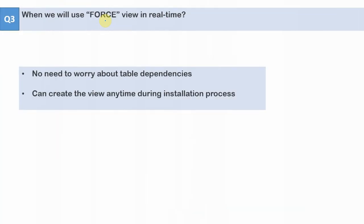The next question is: what are the real-time scenarios where we use a force view? The key advantage of a force view is that we can create the view even if the base tables are not present. This means you don't have to worry about table dependencies. Instead of creating all tables first and then creating views, you can create all your views using the FORCE option, then create the tables later, and at the end of your installation recompile all invalid objects. This is especially helpful when the installation is very large and managing object dependencies becomes tedious.